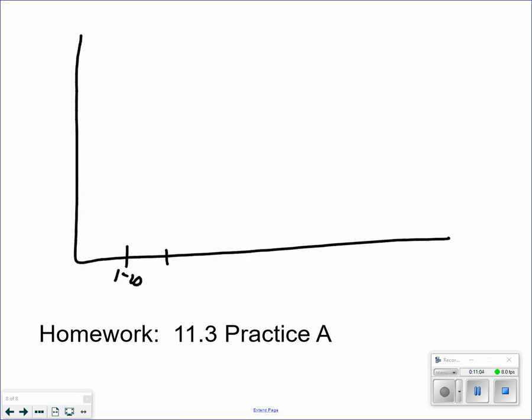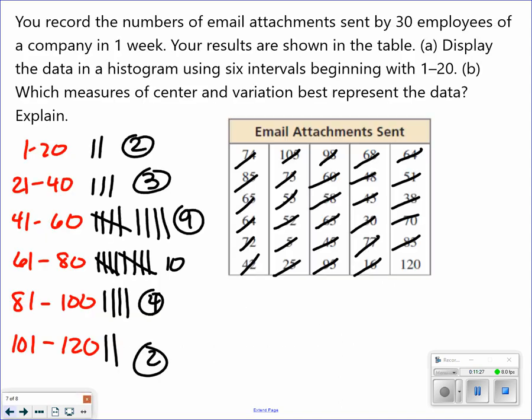First interval is 1 to 20, 21 to 40, 41 to 60, 61 to 80, 81 to 100, and 101 to 120. Now I'm going to go by twos again.